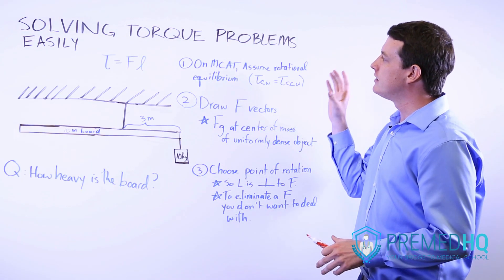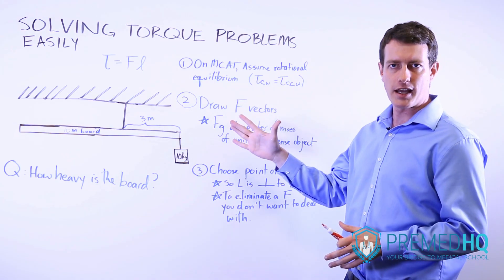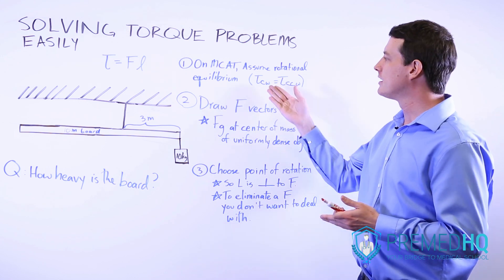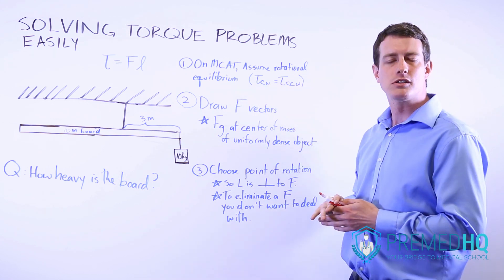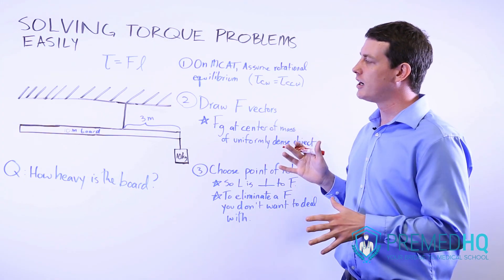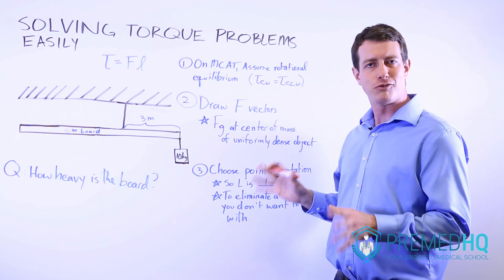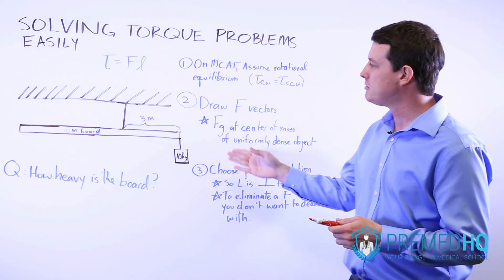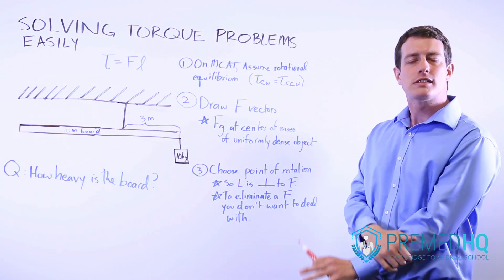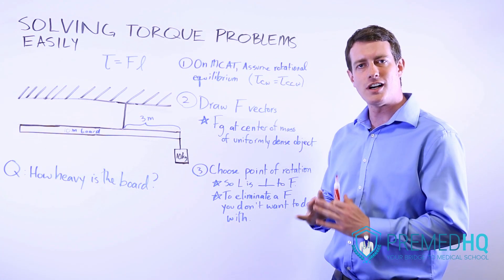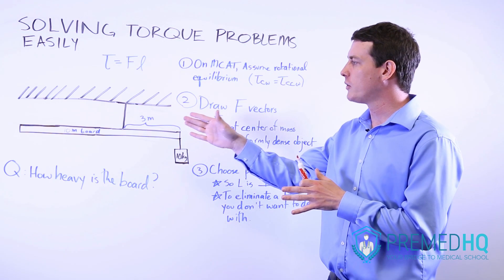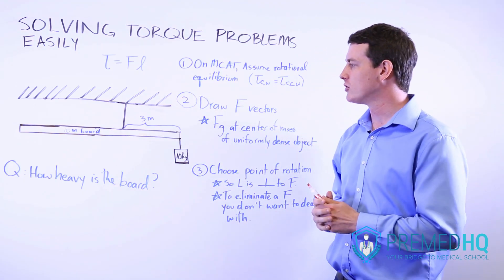The first thing is that if you're doing a torque problem on the MCAT, it's safe to assume that you'll be dealing with rotational equilibrium, meaning that the clockwise torque will be equal to the counterclockwise torque. As soon as you realize that, your next job is to start drawing out the force vectors. And if you have a large object, such as this 10 meter board, you always assess the gravitational force from its center of mass, which you can assume is the center of the object if it's of uniform density.